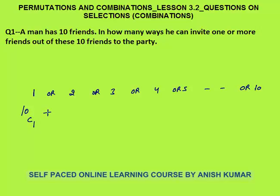As I told you in the fundamental principle of counting slides, 'or' means plus and 'and' means multiplication. Two friends can be selected out of 10 friends in 10C2 ways. This 10C2 includes all possible combinations of selecting 2 friends out of 10. Same way, 3 friends in 10C3 ways, this is 10C4 ways, plus 10C5, up to 10C10.